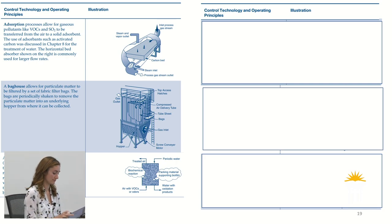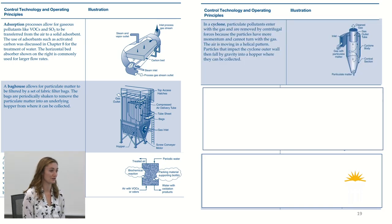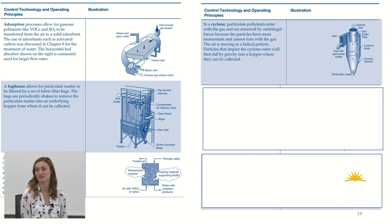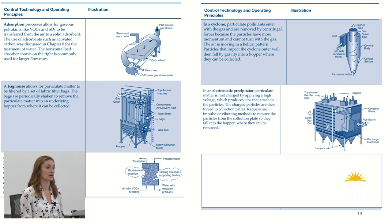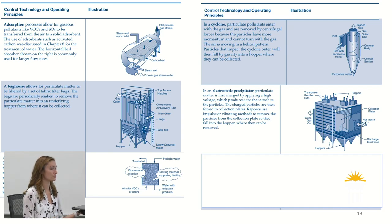Electrostatic precipitators work particularly well for particulate matter, which is generally negatively charged. A high voltage is applied to further charge the particles, increasing their capability to be removed. These are used at industrial plants and chemical processing facilities — places with large stacks emitting gases. The charged particles are then forced through collection plates. The scale of each technology depends on the particular industrial application.